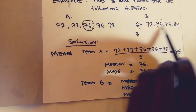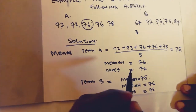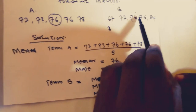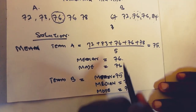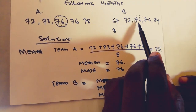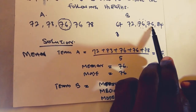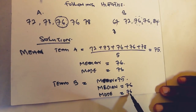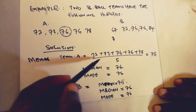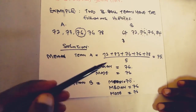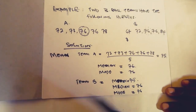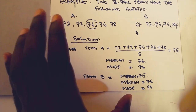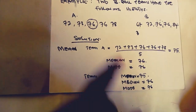For Team B, when you sum all values and divide by 5, the mean is again 75. When arranged in order, 76 is again in the middle, so the median for Team B is also 76. The mode is again 76, as it appears twice while other numbers appear just once. Looking at the two teams, the mean, median, and mode are the same — the measures of central tendency for both teams are identical, giving the impression that these two teams are exactly the same.